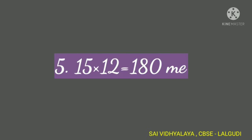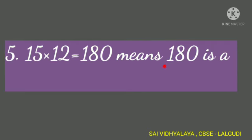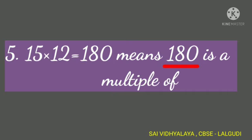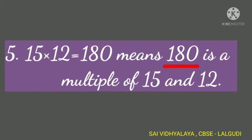15 into 12 is equal to 180, which means 180 is a multiple of both the numbers 15 and 12.